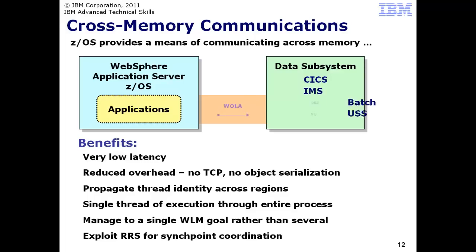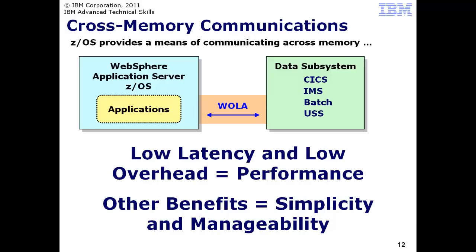This allows the propagation of thread-level security identity from WAS into the data subsystems rather than using hard-coded aliases. A single ZOS thread is used throughout the entire process, which avoids the overhead of thread switching at every hop. This allows you to manage the whole flow to a single WLM goal rather than several, and to exploit RRS for transaction two-phase commit sync point coordination. A variation on this is WOLA, which stands for WebSphere Optimized Local Adapters, allowing bi-directional cross-memory communications between WAS-ZOS and CICS, IMS, Batch Programs, and Unix System Services processes, resulting in better performance and a simpler system for management and control.